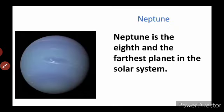Now we will learn about Neptune. Neptune is the eighth and the farthest planet in the solar system. It is the farthest planet because it is number eight in order from the sun.